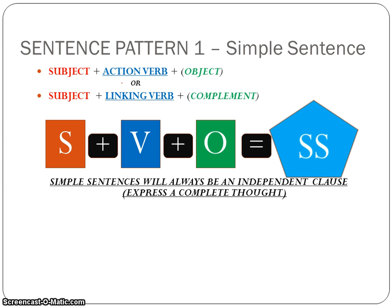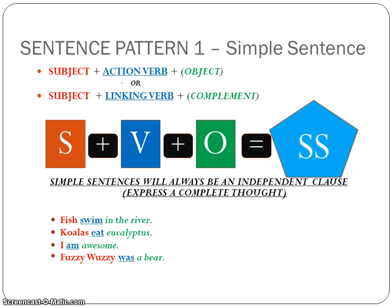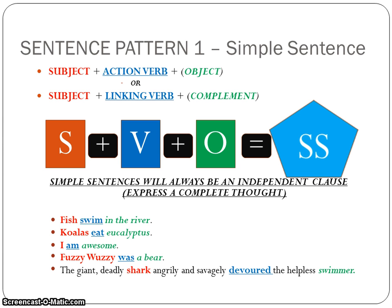Simple sentences are always going to be an independent clause expressing a complete thought. For example: 'Fish swim in the river.' Fish, your noun, is the subject; swim is the verb; and 'in the river' describes where the action takes place — that's your object. 'Koalas eat eucalyptus.' Koalas is your subject, eat is what they're doing, and eucalyptus is what they're eating — that's your object, receiving the action. 'I am awesome.' And don't forget it. 'Fuzzy Wuzzy was a bear' — still a simple sentence. And lastly, 'The giant deadly shark angrily and savagely devoured the helpless swimmer' — also a simple sentence. It has a lot more description, but it still follows the pattern of subject, verb, and object.